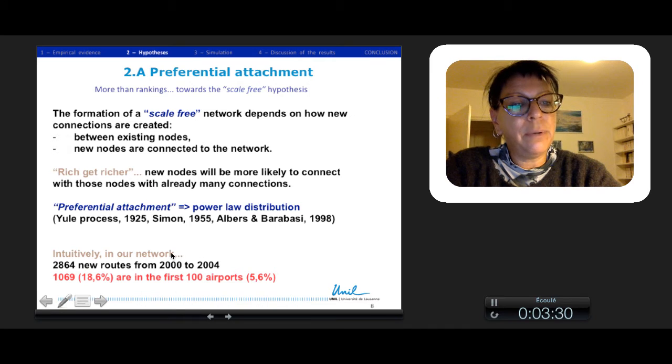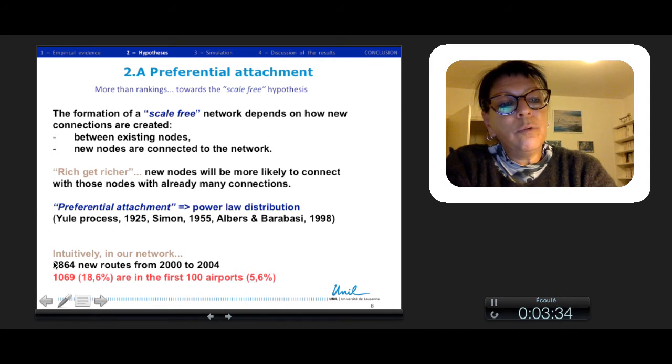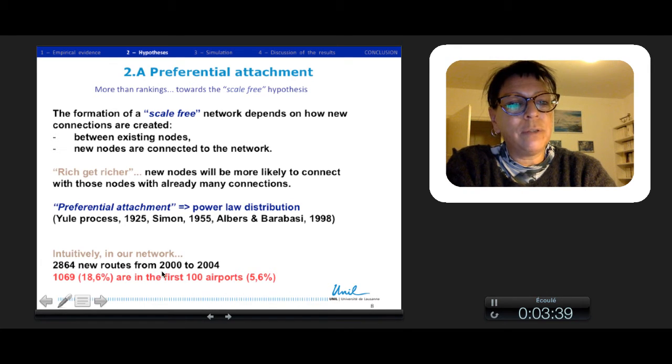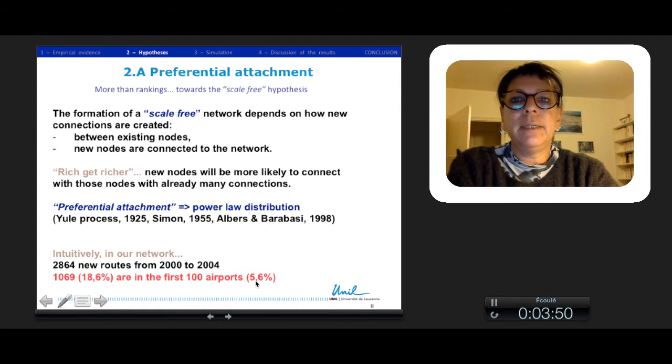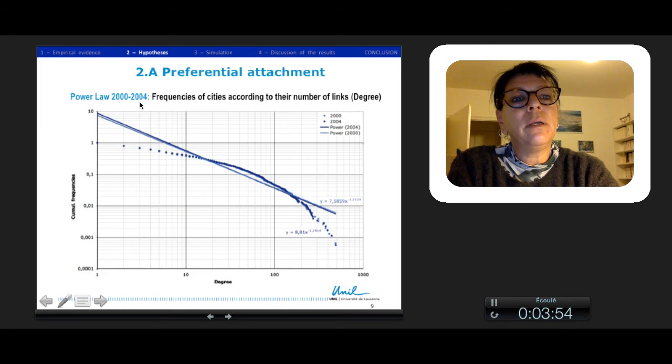Intuitively in our network, we had 2864 new routes from 2000 to 2004, and 18% are in the first 100 airports, which are only 5% of all airports. If we make the power-law between the two dates, we have an increase of the slope a little bit, so more hierarchy between the two dates.